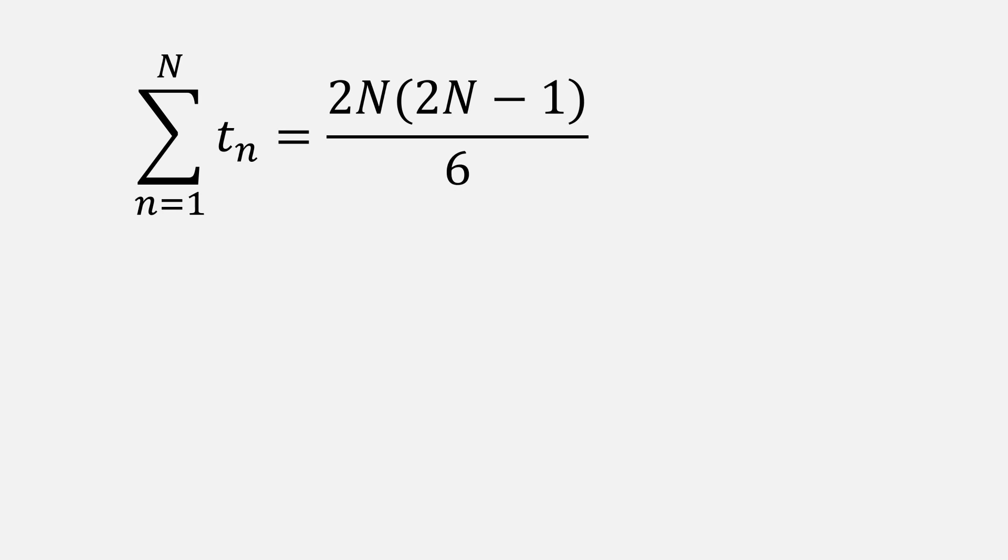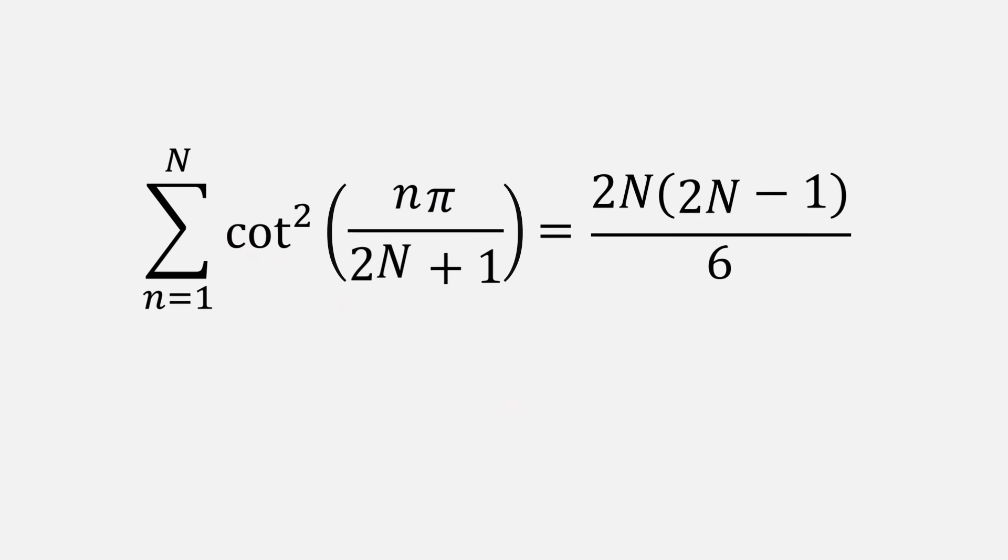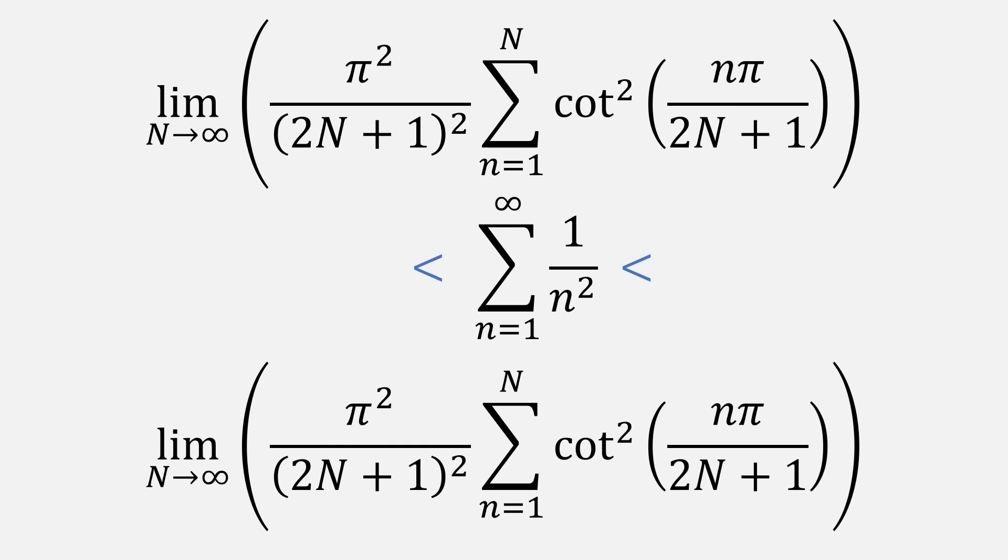Now we're really close. Recall that we made the substitution t equals cotangent squared theta and theta equals n pi over 2n plus 1. Let's insert them into the sum and see what we get. Yes, we get a beautiful and simple formula for the sum of cotangent squared.